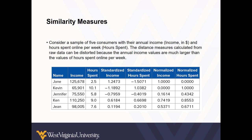Consider a sample of 5 consumers with their annual income and hours spent online per week. The distance measures calculated from raw data can be distorted because the annual income values are much larger than the values of hours spent online per week. Apply the standardization equations and see if you can find some of the same values shown in this table. Give that a shot, and I'll catch you next time.